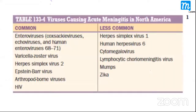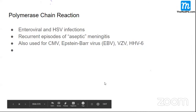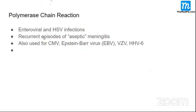After CSF examination, you need to figure out the specific cause — whether it is enterovirus, HSV, Epstein-Barr virus, or others. PCR (polymerase chain reaction) gives a lot of clues. It is especially beneficial for enterovirus and HSV infections. For patients with recurrent episodes of aseptic meningitis, PCR helps find the exact viral cause.